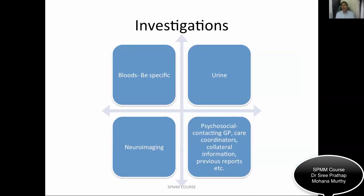When discussing a management plan, mention investigations and then the treatment plan. Be specific — don't just say 'I'll do bloods.' For example, for an alcoholic patient, say you'll check liver function tests; for drug abuse, say you'll do urine analysis checking for illicit drugs like cannabis and cocaine. Investigations also include psychosocial components: contacting the GP, care coordinators, key workers, getting collateral from family, and obtaining previous reports.